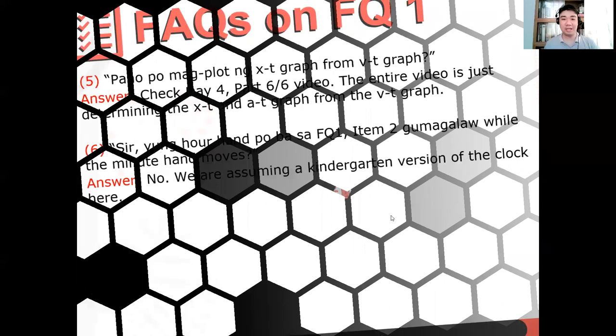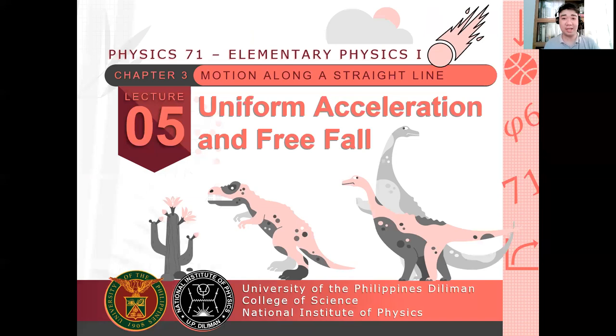Let's go to our discussion for today, which is on uniform acceleration and freefall. That will be our discussion for today. For those who are just coming in, welcome to this discussion for Physics 71. We are now in day five, and this will be the last topic before your FQ1 coverage. So the topic for today is on uniform acceleration and freefall.